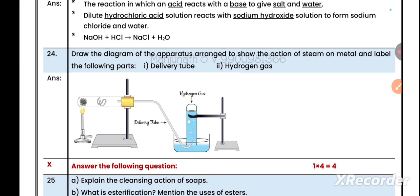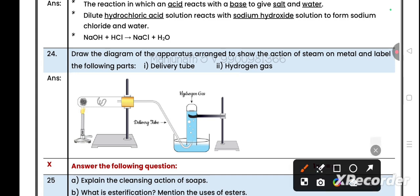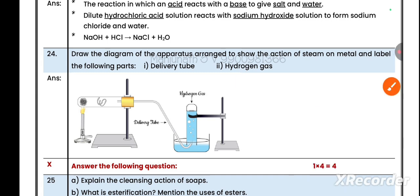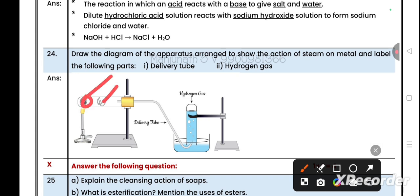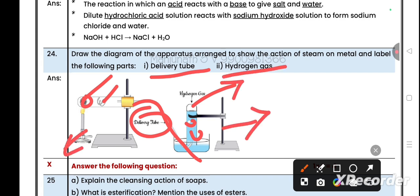Question number 24: Draw the diagram of apparatus arranged to show the reaction of steam on metal and label the following parts: delivery tube and hydrogen gas. This same diagram was asked in model question paper 3 and model question paper 4. This is a very important diagram. Both diagrams where acids react with metals and liberate hydrogen are very important. Out of these two, one will come in your exam, so practice these diagrams very carefully. This is the water, glass wool containing water, this is the metal, then this is the delivery tube. Hydrogen is collected in this test tube in the form of bubbles.